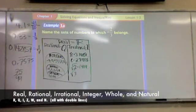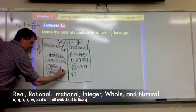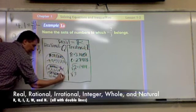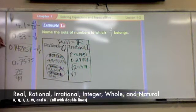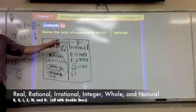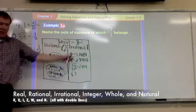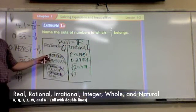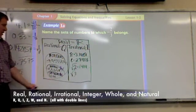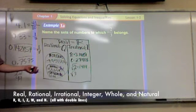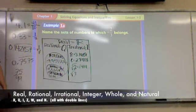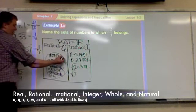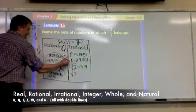All right, now for the letters for these. Whole and natural are easy to remember. Because whole is W. Natural is N. The one that's tough to remember because I is taken for irrational. N is taken if you wanted to use the next letter for natural. They don't use T or actually any letter that's in that word. It's Z.